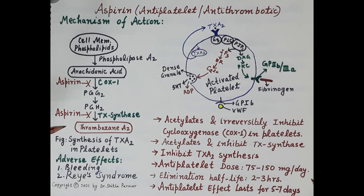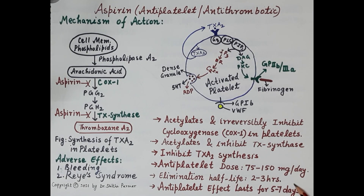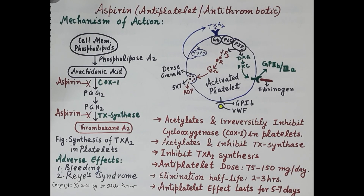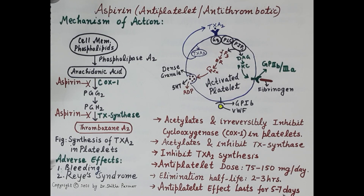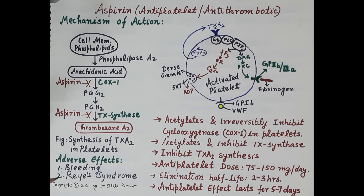The antiplatelet dose of aspirin is 75 to 150 milligrams per day. Its elimination half-life is two to three hours. Since aspirin irreversibly inhibits cyclooxygenase in platelets, the antiplatelet effect lasts about five to seven days. The main adverse effects of aspirin are bleeding and Reye syndrome. This concludes the pharmacology of aspirin as an antiplatelet and antithrombotic drug.